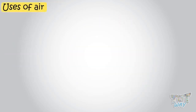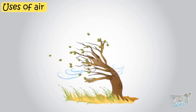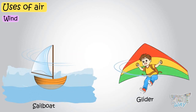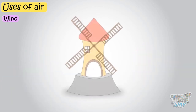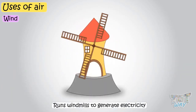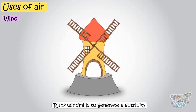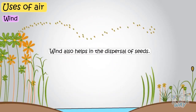Now let's see some uses of air and how air is important for us. Moving air, that is the wind, has great force. It enables the movement of sailboats and gliders. It runs windmills, which are used to generate electricity. Wind also helps in the dispersal of seeds.